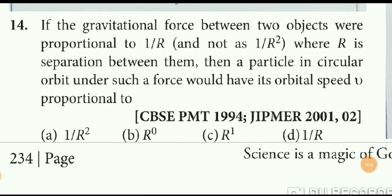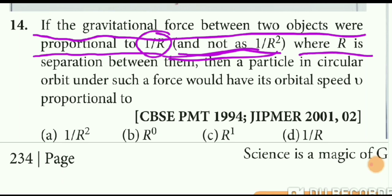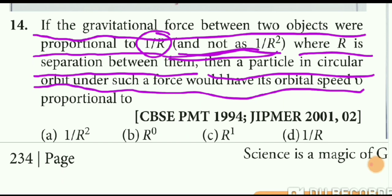Welcome to Physics Solution Point. Today we are going to start gravitation question exercise solution part 3. In this part we will initiate from question number 14. Question number 14 basically says: if gravitational force between two objects were proportional to 1/r and not as 1/r², it means if gravitational force doesn't follow the inverse square rule, then the particle in a circular orbit under such force would have its orbital speed v proportional to what?